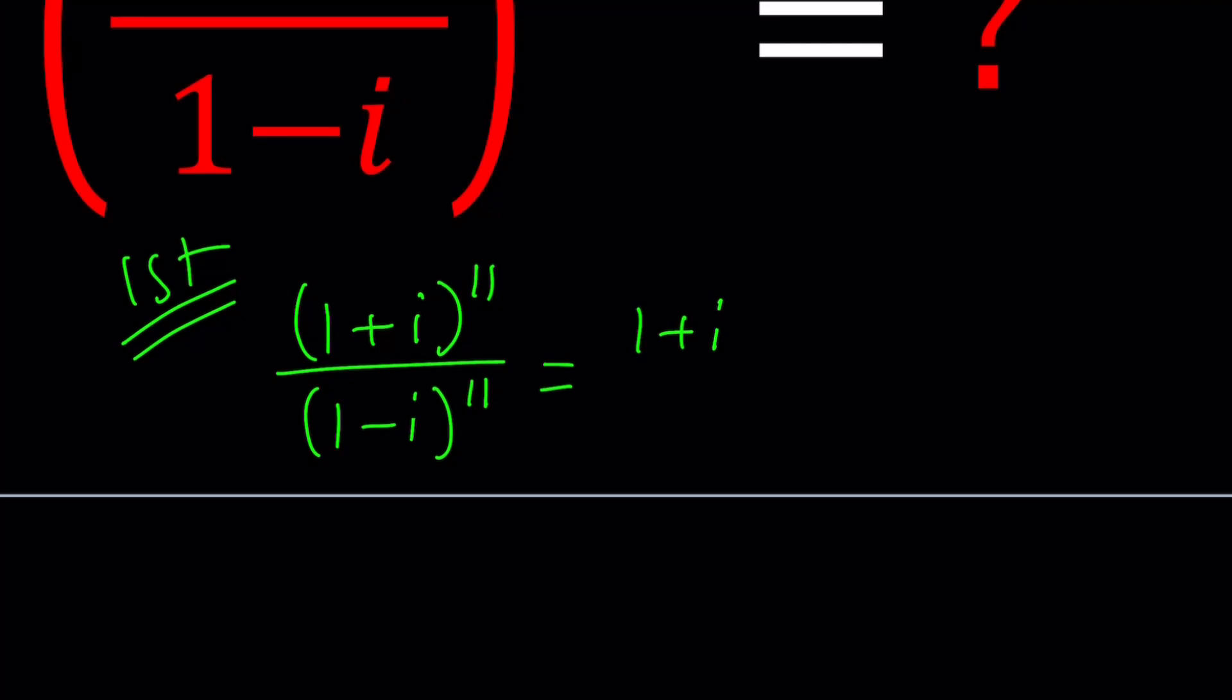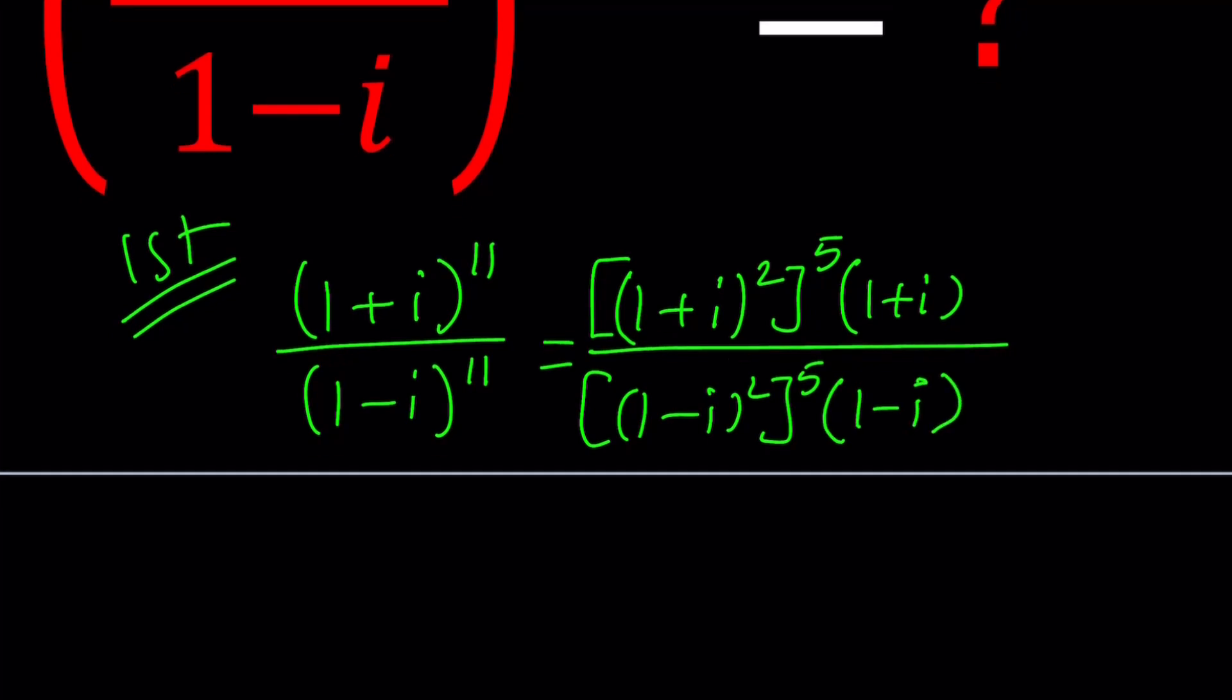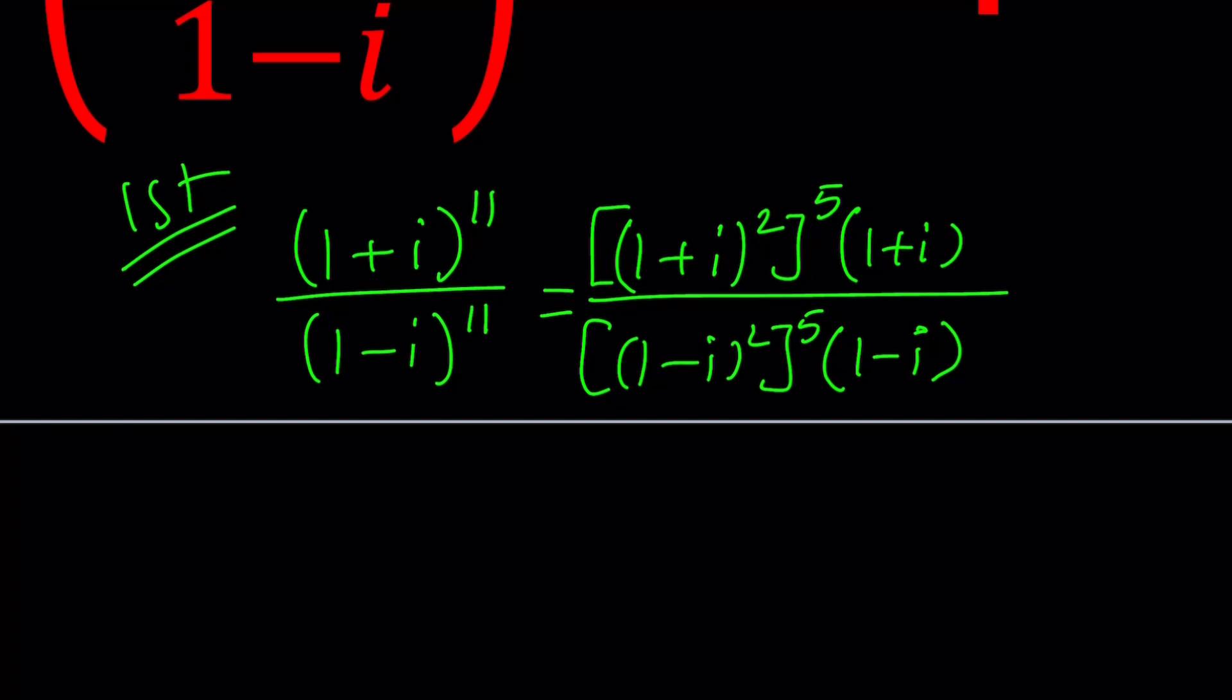So let's go ahead and square this expression. And then, of course, I need to get to the 11th power. So I'm going to raise it to the fifth and then multiply by an extra 1 plus I. Same thing at the bottom. And now, we have 1 plus I squared and 1 minus I squared. Remember what they were?